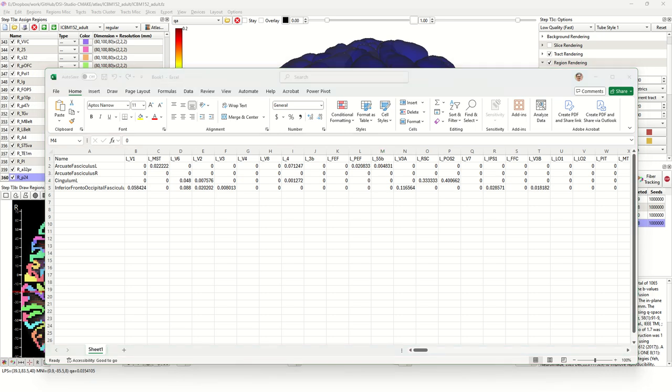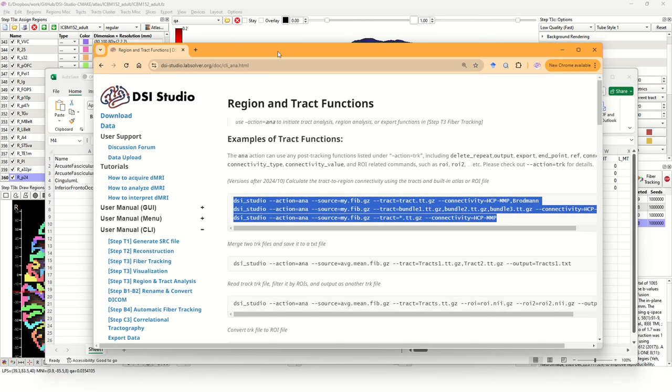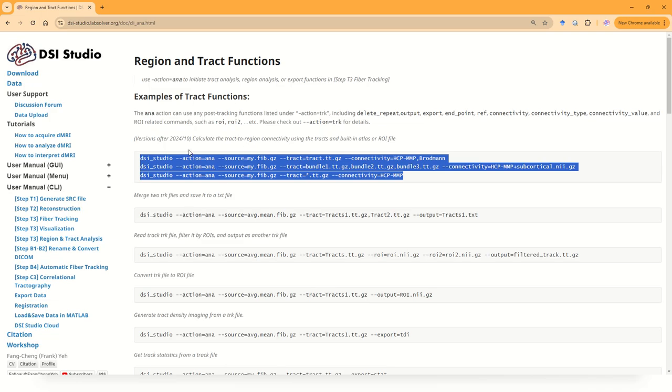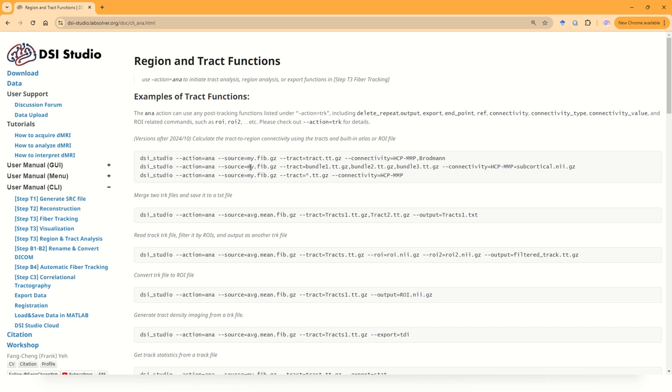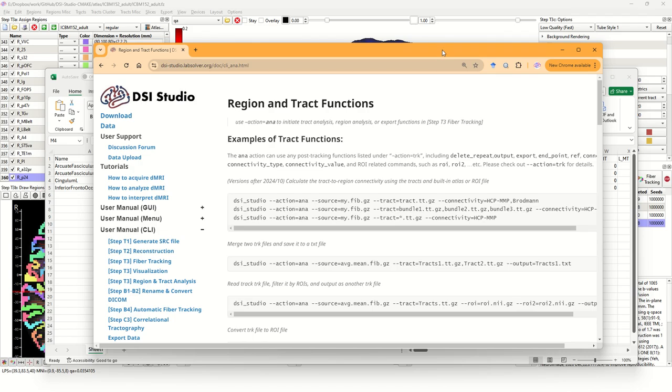Of course, we can do this in command line. You can refer to the online documentation under the track analysis function. Go to the DSS Studio website under region and track analysis. Go to this page. The first example is newly added. You could assign the FIB file of the subject. For the track, you can include all tracks that have been mapped using automatic fiber tracking. For connectivity, you can specify the name of the atlas. Here, the same as our example is HCP MMP. You can assign multiple atlases separated by comma. This concludes the function of tract-to-region connectome.